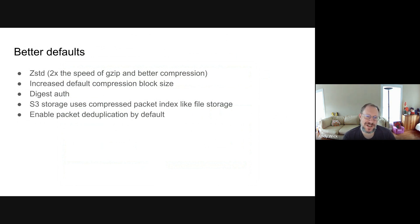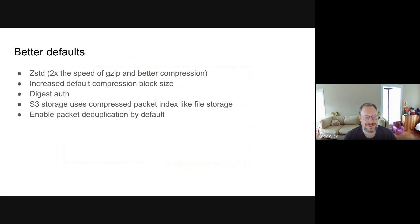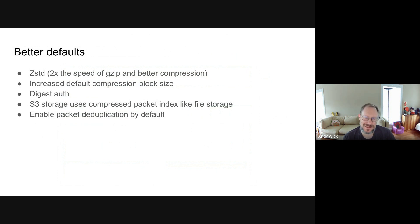We're going to have digest as the default authentication. If you use S3 for your storage, we're changing several things, including making it so that we compress the packet index like we do for on-disk storage — currently, if you store your PCAP on disk we do index compression, but if you store it in S3 we don't. We're changing that so they're both the same. We're also going to enable packet deduplication by default. Currently it is off, but we found that packet deduplication can save at least 5% to 10% of your PCAP storage, depending on your network.